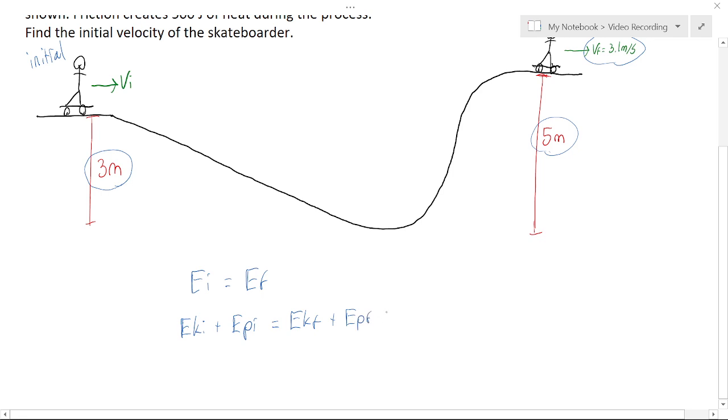And we say that there's heat energy on the final side of the problem because it says 500 joules of heat was created. Now that heat might not be with the skateboarder anymore. The heat goes out into the air, but we still put it on the final side because the heat wasn't there at the start of the problem, and it is in the environment at the end of the problem.